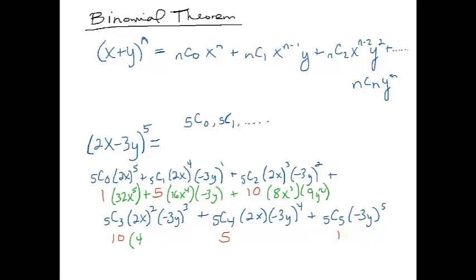Over here this is going to simplify to 8x cubed times 9y squared. Now I'm down here. This is going to simplify to 4x squared times negative 27y cubed. Down here we have 2x still times, this is going to be positive 81y to the fourth, and then here we would have negative 243y to the fifth.